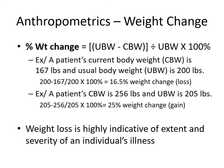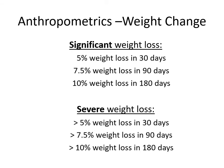Weight loss is highly indicative of the extent and severity of an individual's illness. Significant weight loss is defined as up to 5% in 30 days, up to 7.5% in 90 days, and up to 10% in 180 days. Severe weight loss is more than 5% in 30 days, more than 7.5% in 90 days, or more than 10% in 180 days.